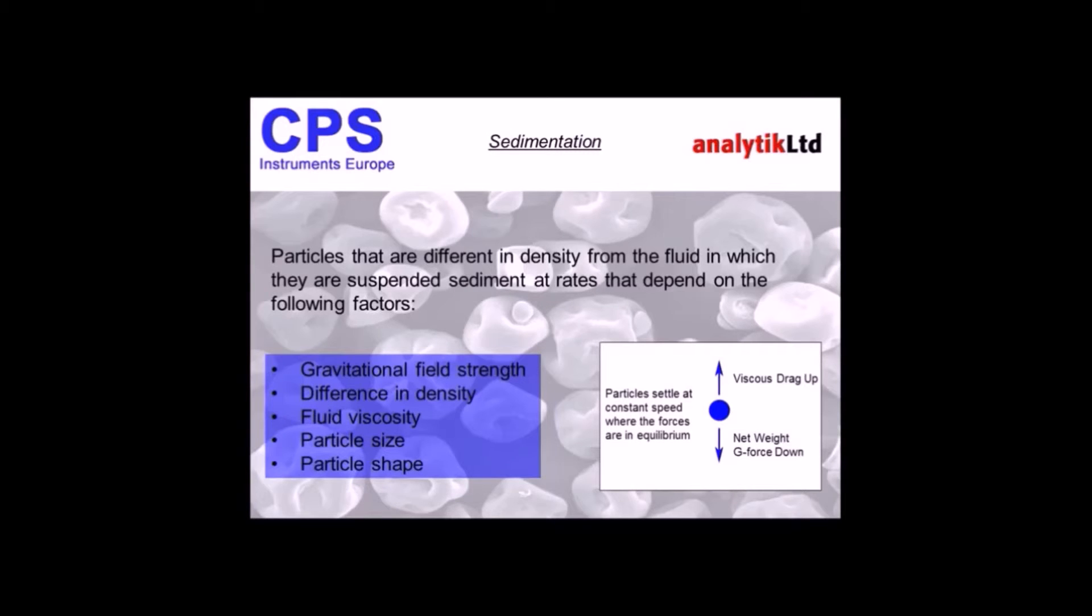The difference in density between the particles and the fluid would also affect the sedimentation rate. And as you'll probably understand, if you've got particles where the density is close to the fluid density, then the rate of sedimentation will be slow. And vice versa, particles with high density will flow through very quickly.